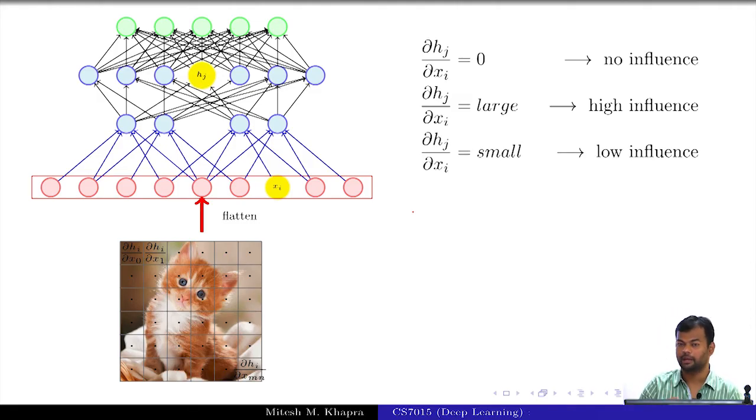So this is how I will see whether a pixel has an influence on certain neurons in some of the hidden layers, and this is not restricted to convolutional neural networks as you can see. I am just actually treating it like a feedforward neural network with sparse connections.